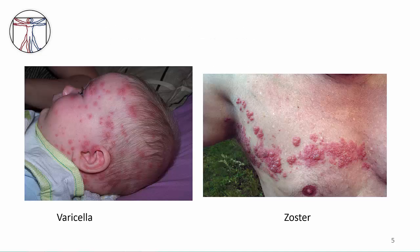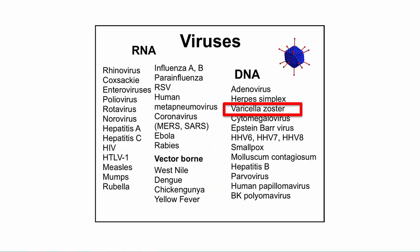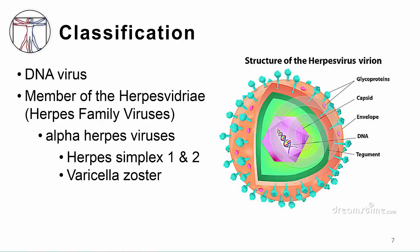These pictures show the same rash, the same virus, two diseases: chickenpox or varicella, and shingles or zoster. VZV illustrates the hallmark feature of the herpes virus family — latency — which is the establishment of lifelong infection with this virus. VZV is a DNA virus and a member of the herpes virus family. It is an alpha herpes virus, similar to herpes simplex virus 1 or 2, the other members of the alpha herpes virus subgroup.